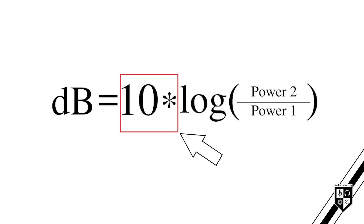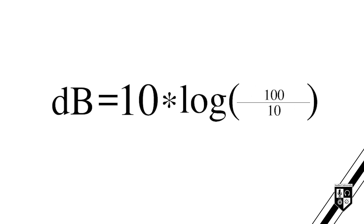Now that you've learned the formula for calculating ratios in bells, let's look at how to adjust that formula to calculate ratios in decibels. A decibel is 1 tenth of a bell. For comparison, let's use the same power quantities — 10 watts and 100 watts — this time finding the ratio in decibels. To start, divide 100 by 10 to find the ratio, which is 10.